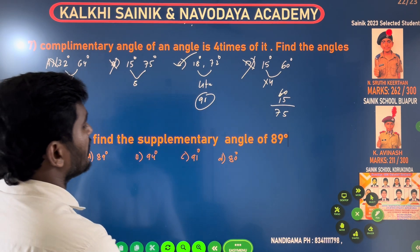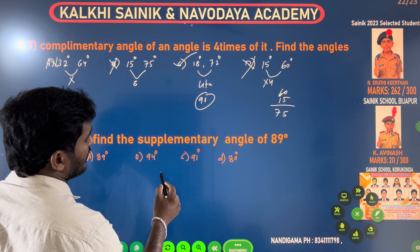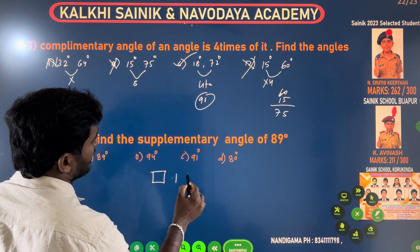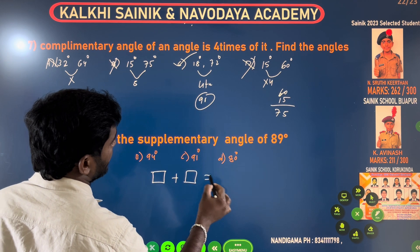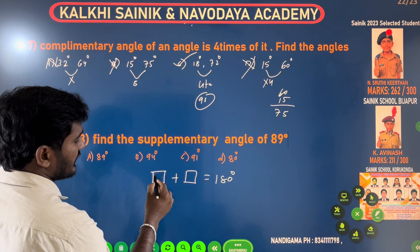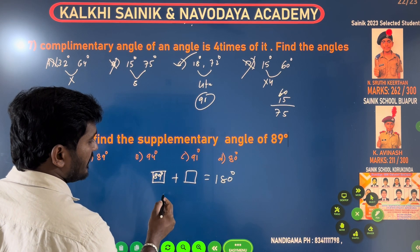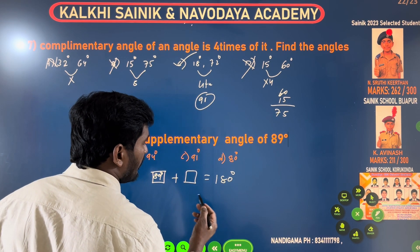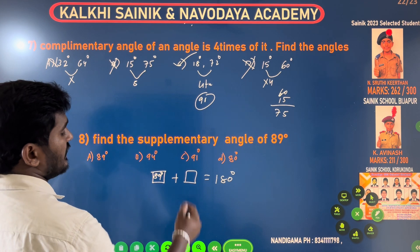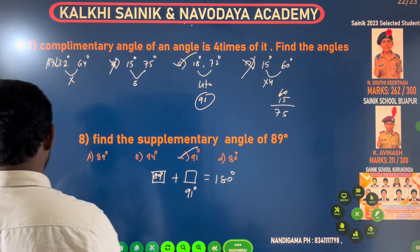Find the supplementary angle of 89 degrees. The supplementary angle of 89 degrees — we add to get 180. It's very clear.